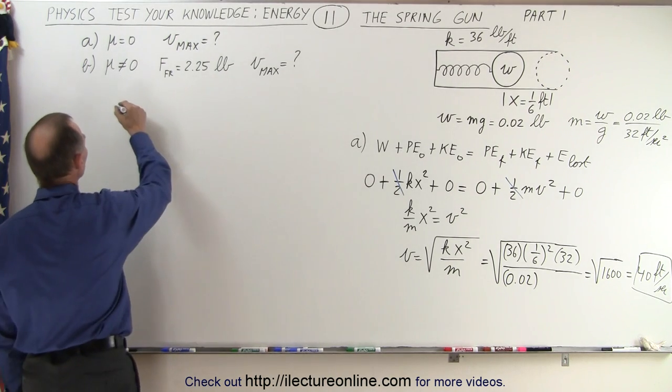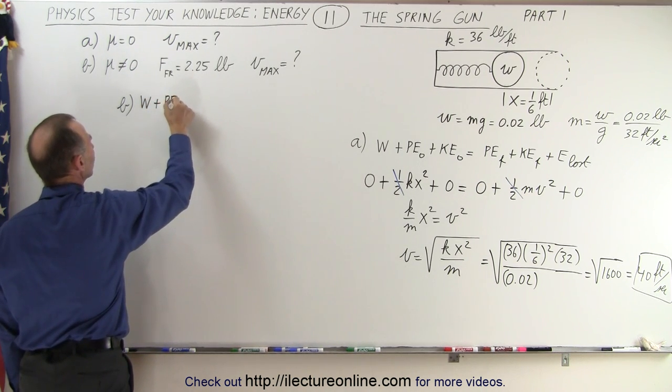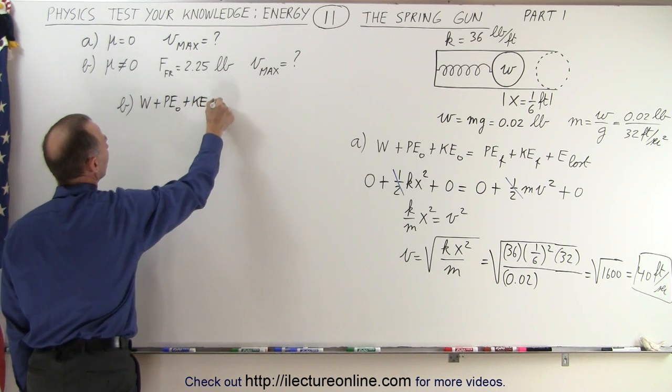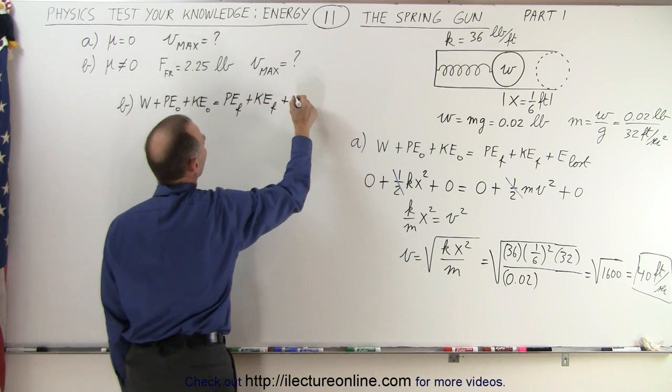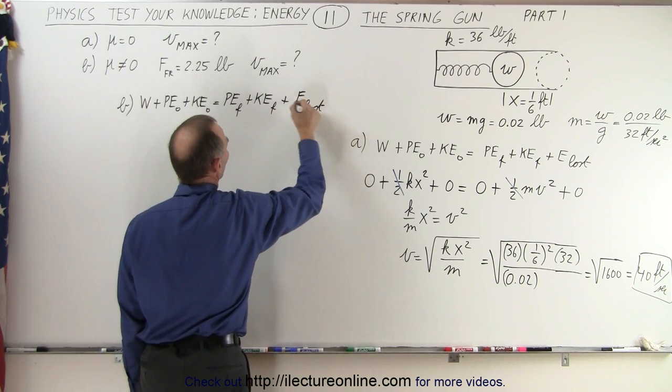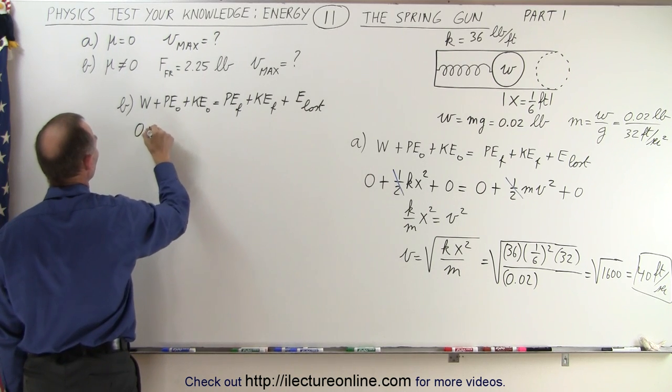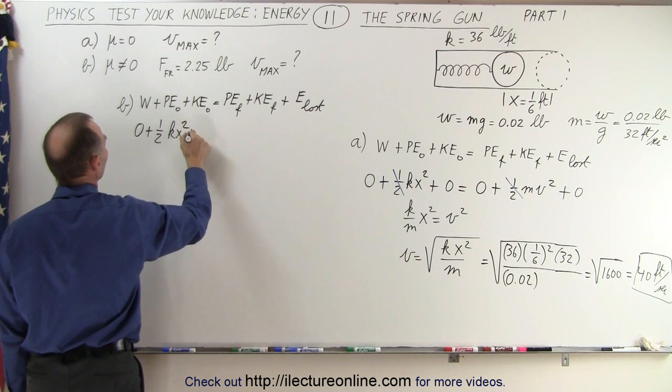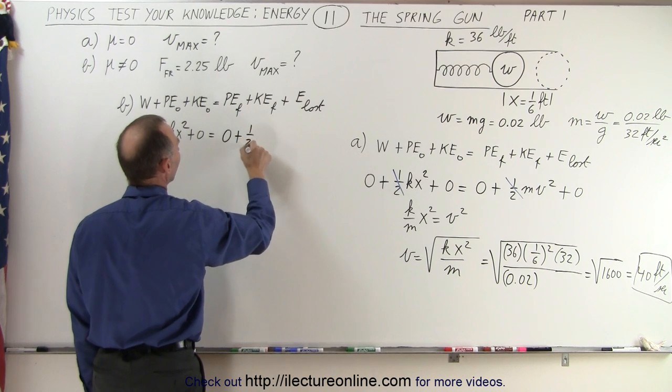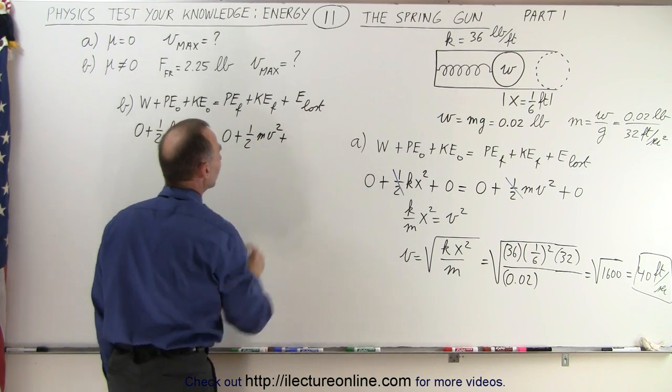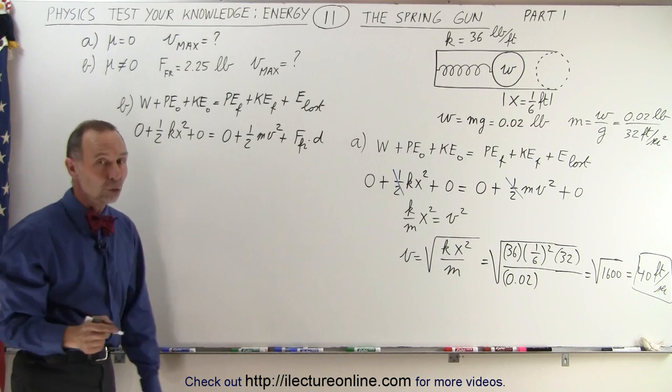But now for part B we're supposed to include friction, so we use the same equation: work put into the system plus any initial potential energy plus any initial kinetic energy is equal to potential energy final plus kinetic energy final plus any energy lost due to the work done to overcome friction. So in this case we start with the same premise: we have 0 plus 1/2 kx squared plus 0 is equal to potential energy final would be 0, kinetic energy final would be 1/2 mv squared, but now we have energy lost which is force friction times distance, and the friction force is a known quantity.